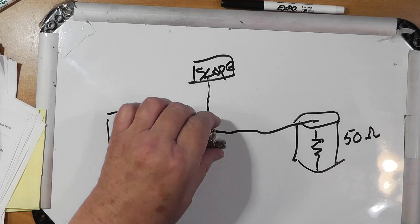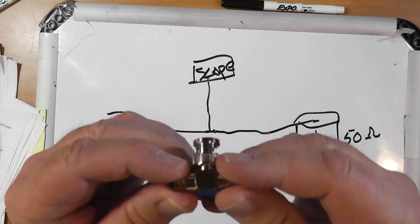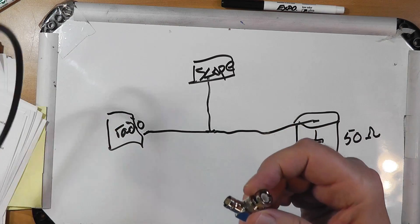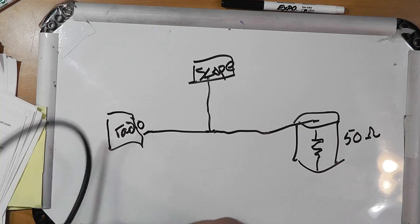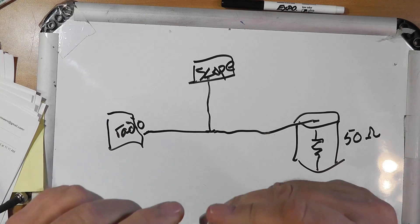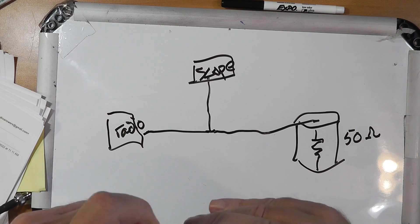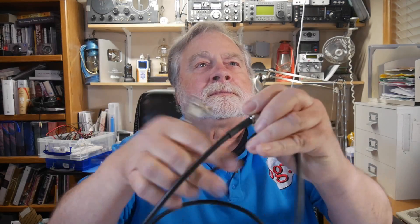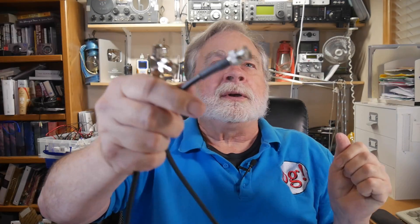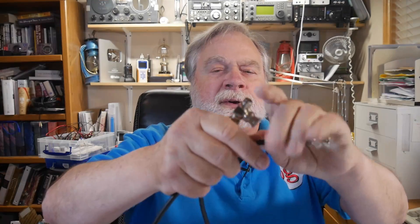Here's the T. This allows you to take a BNC connector like this from a cable and connect this to your radio.